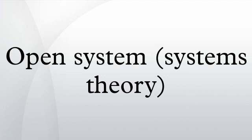An open system is a system that has external interactions. Such interactions can take the form of information, energy, or material transfers into or out of the system boundary, depending on the discipline which defines the concept.